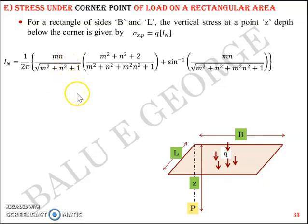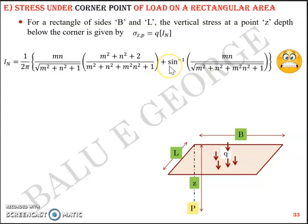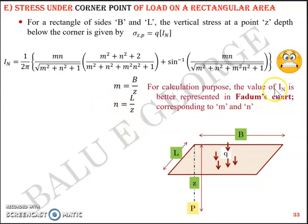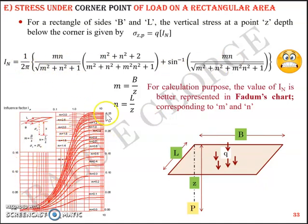The equation for In is a function of m and n — it's a complex expression, but you don't need to memorize it. You obtain In from a chart. m = B/z and n = L/z, where B is the shorter dimension. Once you know breadth, length, and depth, you get m and n, and then read In from Fadum's chart corresponding to those values.